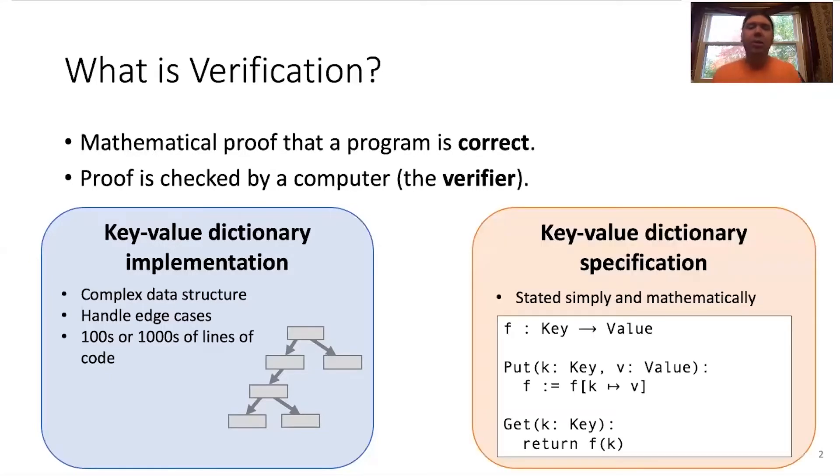And so we want to be really confident that this implementation is correct. And so in verification, we'll construct some kind of specification of how we want it to act. And so we can make our specification very precise. We can state it mathematically like this specification here or in terms of a mathematical function that explains what exactly we want a key-value dictionary to do. And then we construct some kind of proof that our implementation actually matches this abstract behavior. And we're going to have this proof checked by computer so we can be extremely confident that it's correct. And that's what verification is.